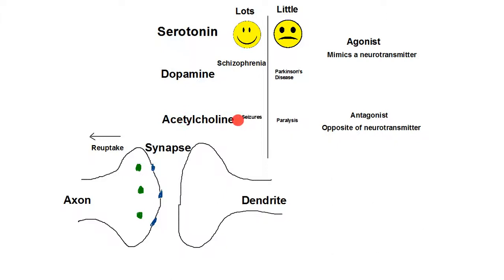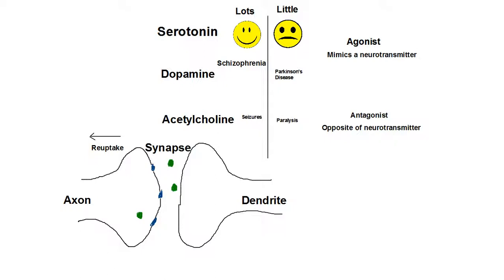With acetylcholine, if someone has seizures we could give them an antagonist of acetylcholine to calm them down. If they have paralysis, we could give them an agonist to fix that. For a person with too little serotonin, we could give them an agonist of serotonin, or we could give them an SSRI, which prevents reuptake of the feel-good neurotransmitter, making it more efficient.